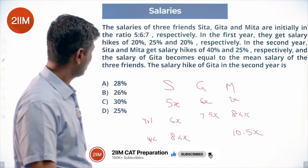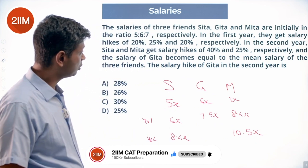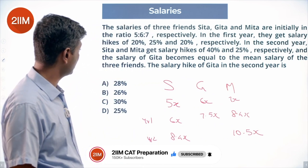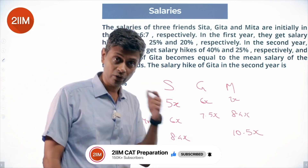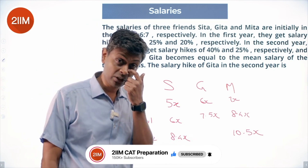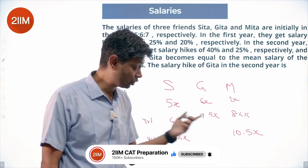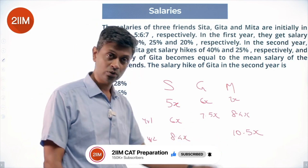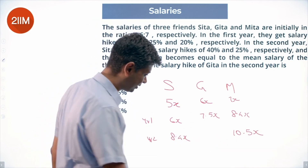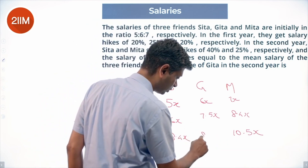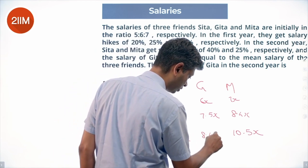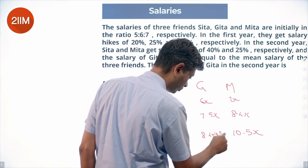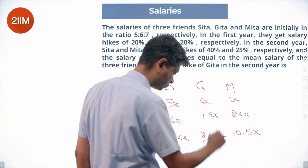The salary of Geeta in year 2 becomes equal to the mean salary of the three friends. Since Geeta is the mean of all three, Geeta's salary should be the mean of Sita's and Meeta's values. Geeta's salary is (8.4 + 10.5) / 2.